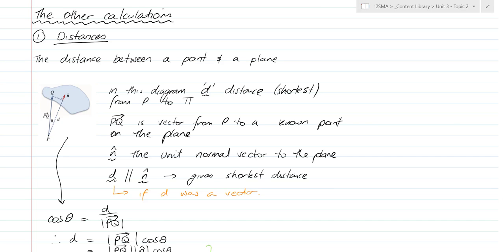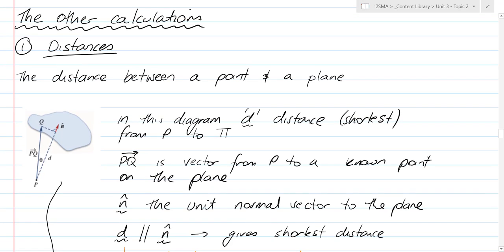So the first topic is distances. I've pre-written a fair bit of this because I know some of you like to read a little bit ahead — that's why I've done that. The distance between a point and a plane is reasonably easy as long as you know the rules. It's very procedural. You won't be asked to do much beyond this.